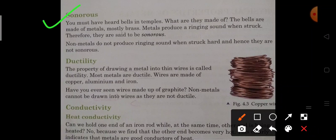Sonorous: Metals produce sound, that means they are sonorous. You have heard bells in temples - the bells are made up of metal, mostly brass. Metals produce ringing sound when struck, therefore they are sonorous. Non-metals do not produce ringing sound when they are struck hard and hence they are not sonorous.